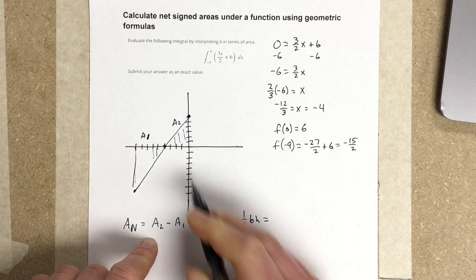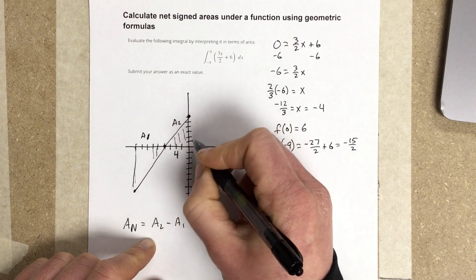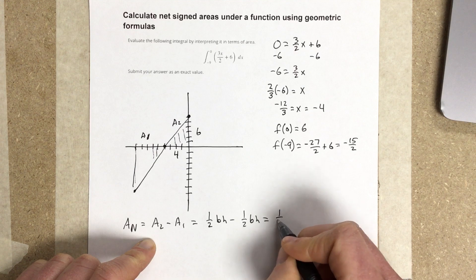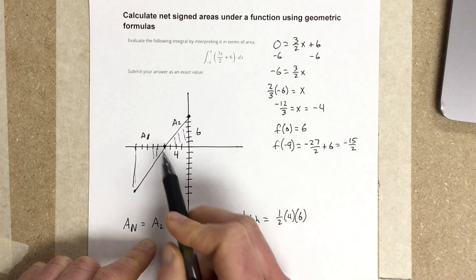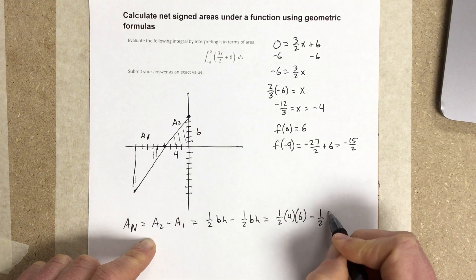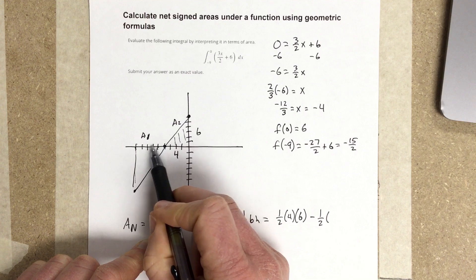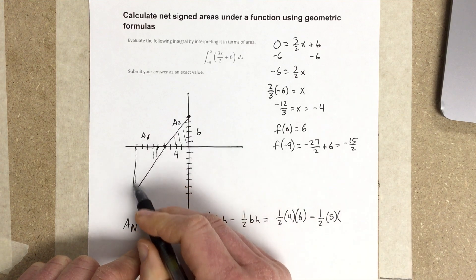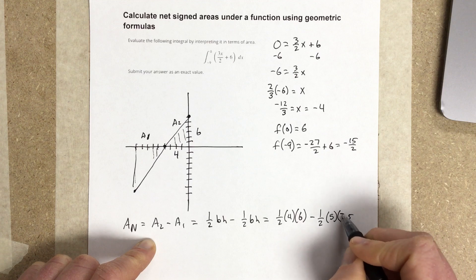So I look at area 2, and that would be a width of 4, or a base of 4, and a height of 6. So we have 1/2, 4 times 6. And then I look at the other triangle. It has a base of 5 and a height of 7.5. Which I might just write that as 15 over 2. Let's leave it at 7.5. That's fine.